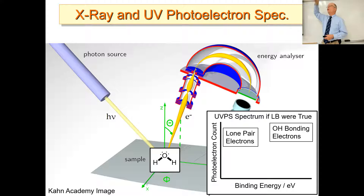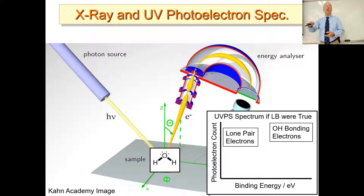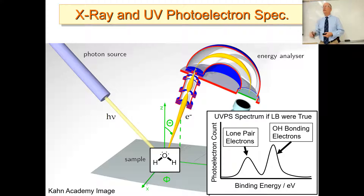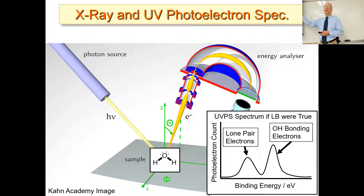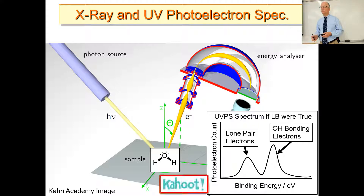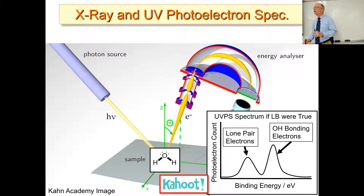Let's put water in there and hit it with X-rays or UV. We scan our analyzer and should see a peak for the lone pair electrons and a peak for the OH bonding electrons. We're sweeping the charge on the analyzer, seeing the energies of the electrons in the molecule — digging into the molecule layer by layer. If we have two types of electrons, we ought to have two peaks: one burst when we hit the energy for the lone pairs, and one when we hit the energy of the bonding electrons. That's what local bond theory would predict — two peaks.